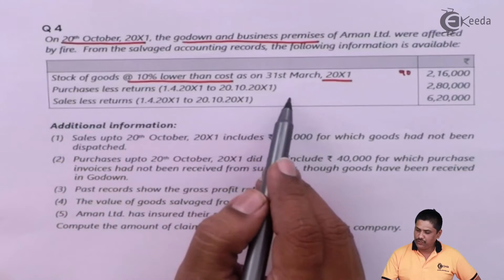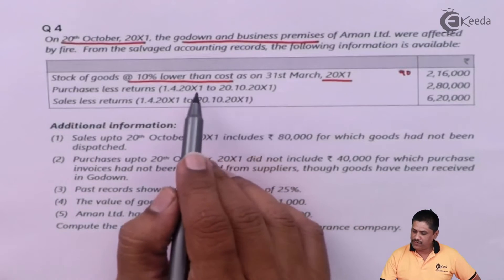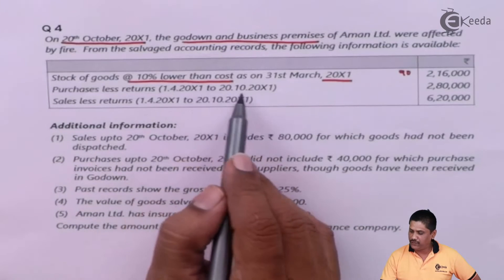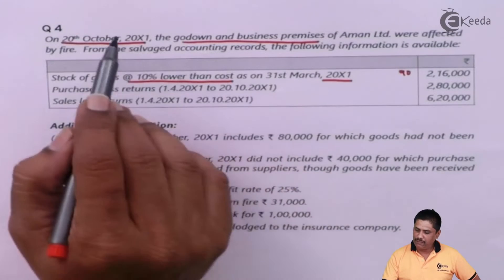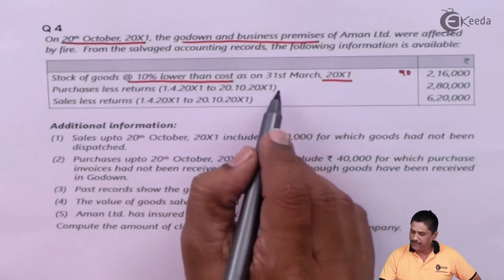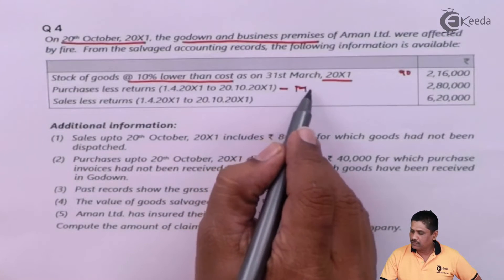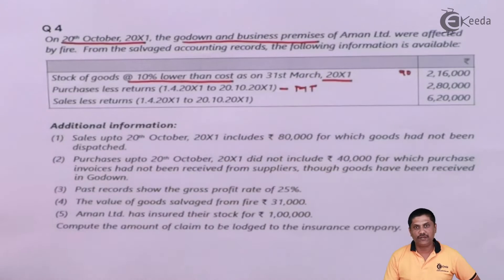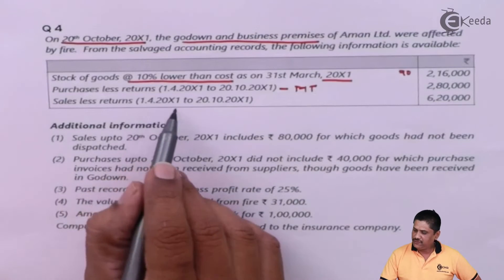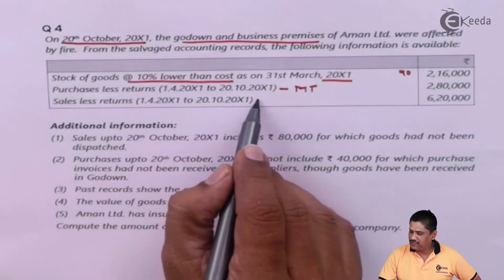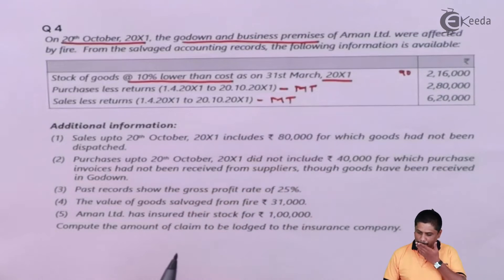Purchases less returns during the period from 1st April X1 to 20th October X1 — this is our memorandum trading period from the date of the last balance sheet up to the date of fire. Sales for the same period will also be taken care of in the memorandum trading account.